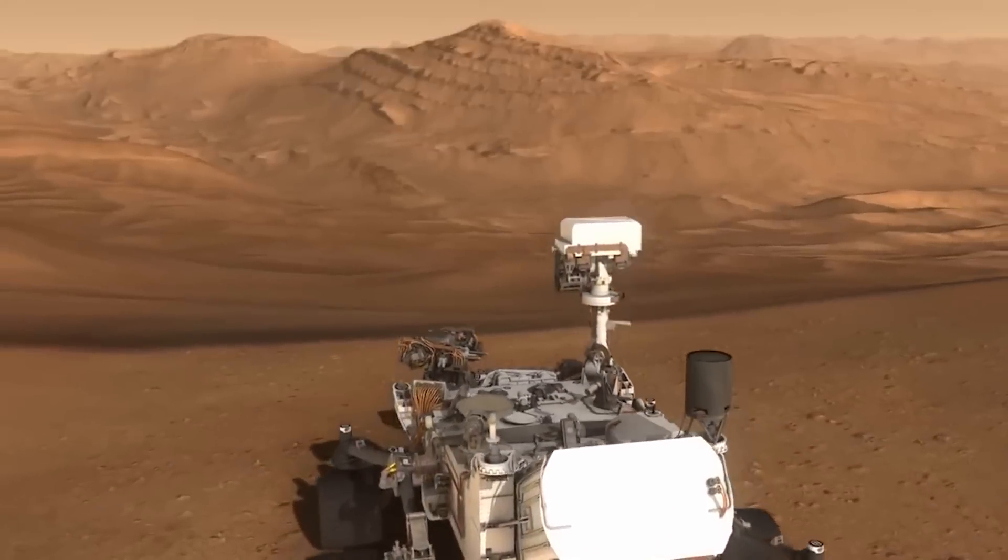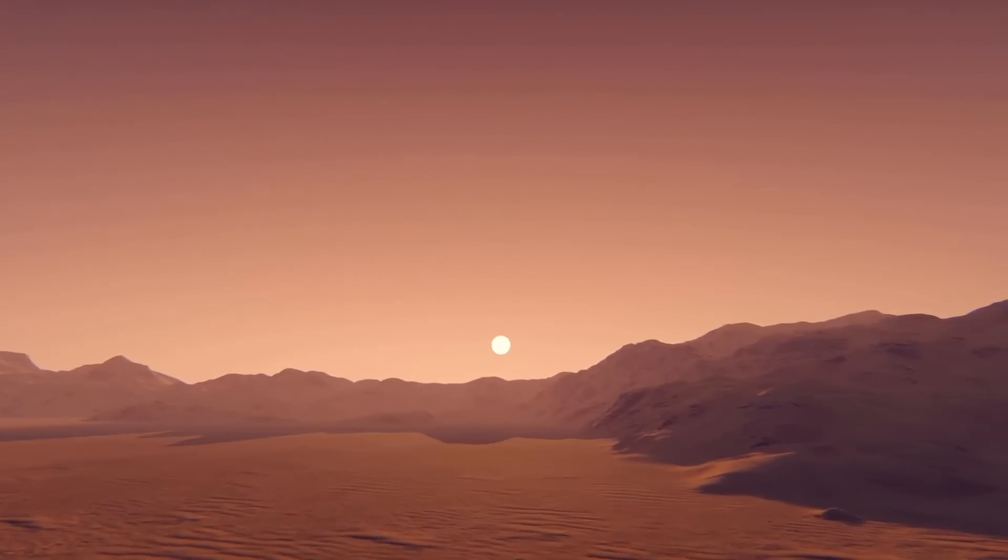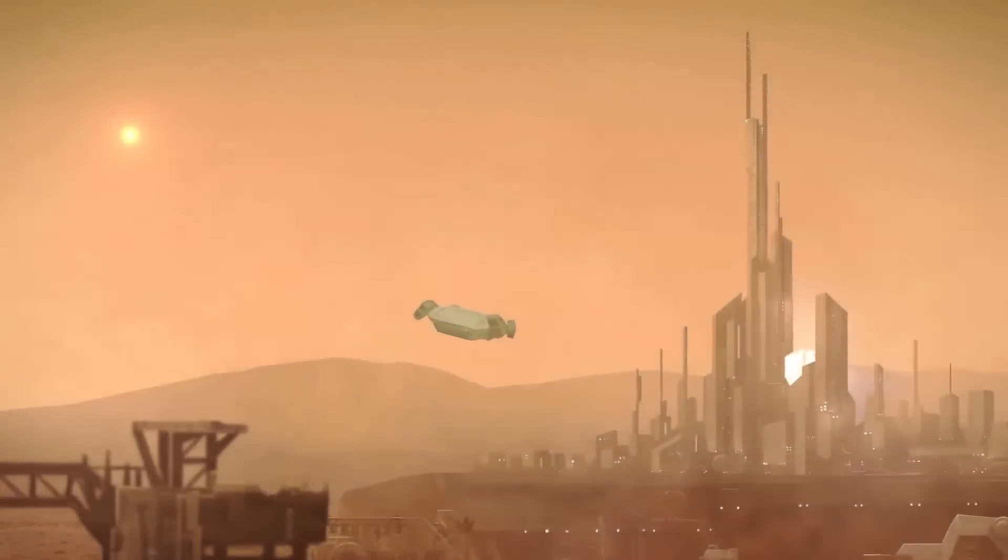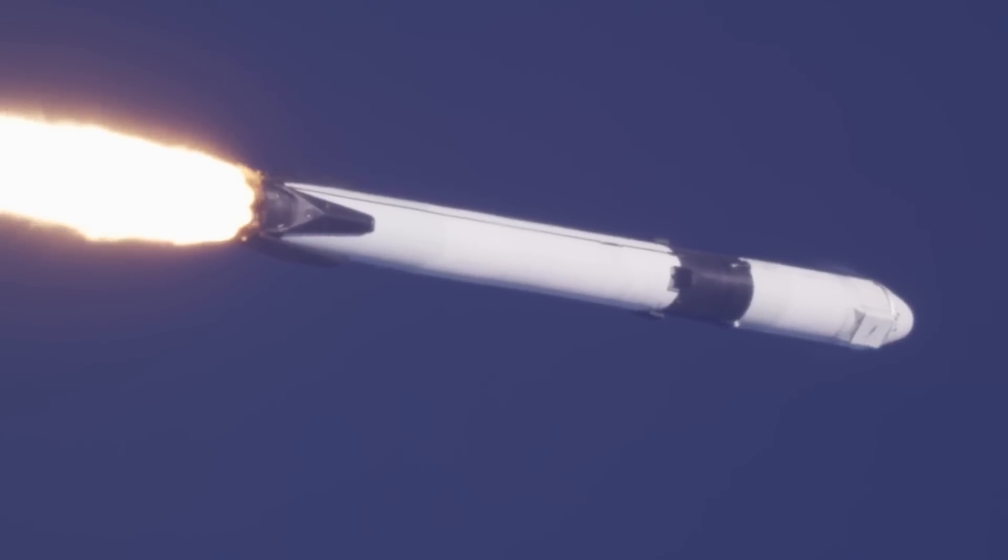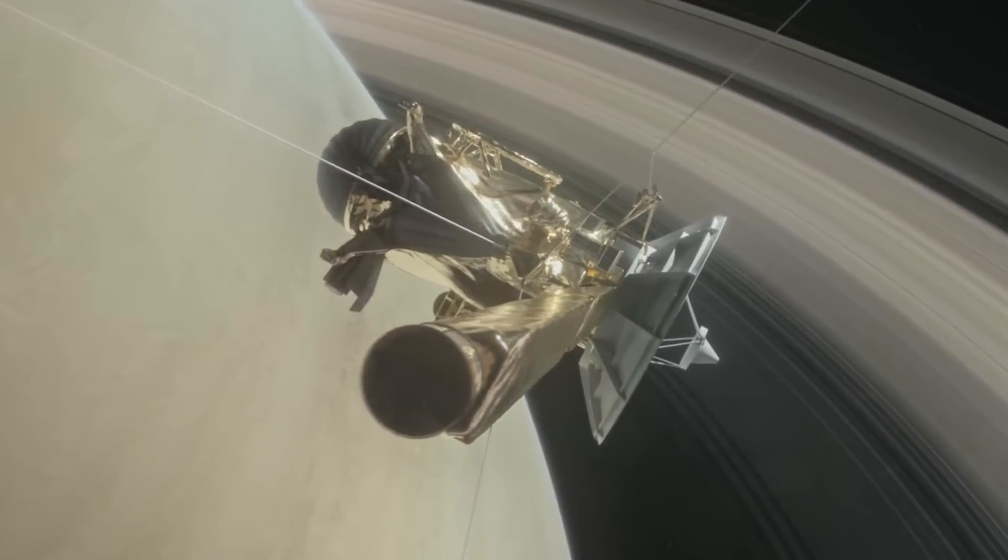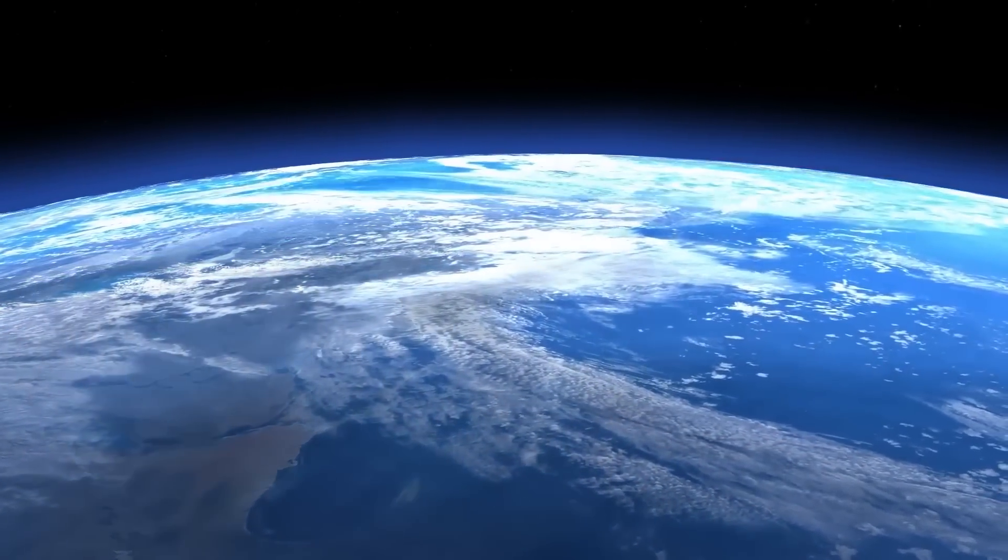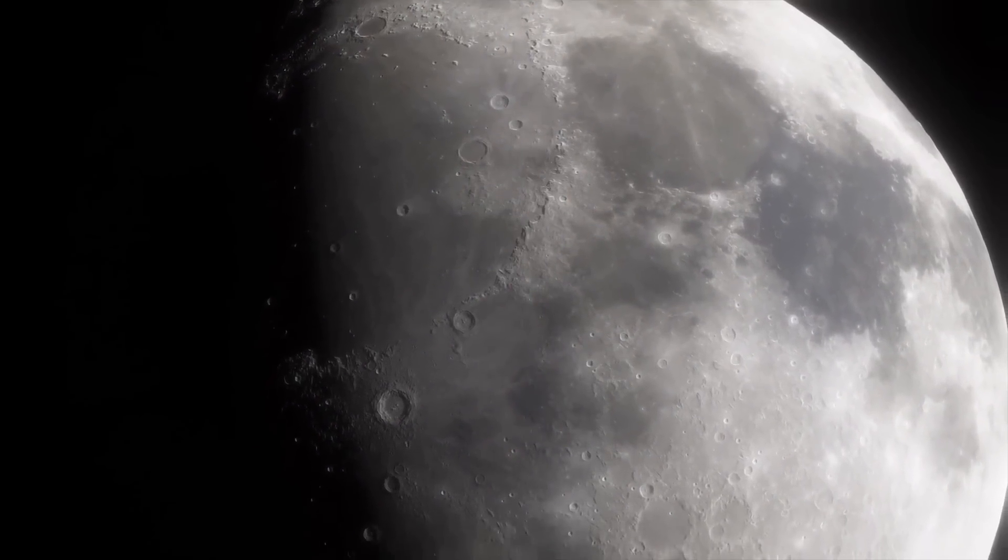By that time, samples from Mars will have returned to Earth and may even include hard evidence that life ever existed on the red planet or currently does. Searches for life will be conducted by spacecraft at Saturn's Titan and Jupiter's Europa, looking for evidence of it either in surface water or in each moon's subsurface ocean.